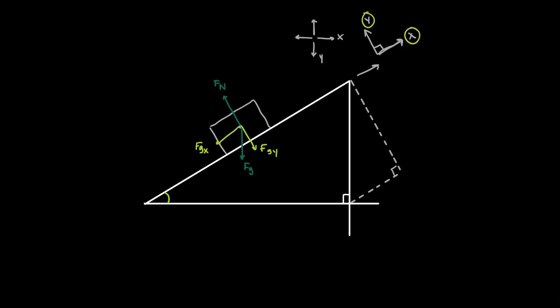Now typically, the trigonometric convention we would use for setting up components is we might expect cos theta to be used for the x-component and sine theta for the y-component. This is what you usually see in kinematics. But in the situation of an inclined plane, this gets confusing because these are actually reversed — we use cos theta to define the y-component and sine theta to define the x-component of gravity.